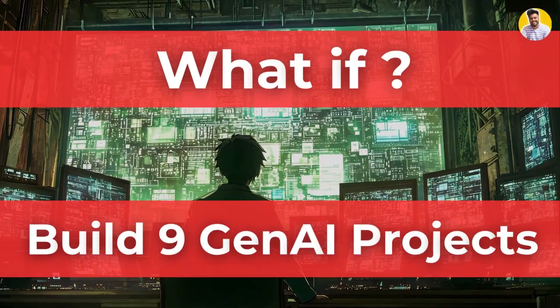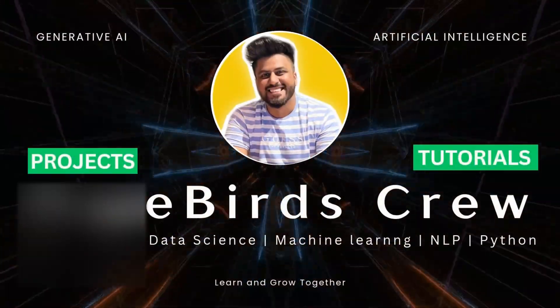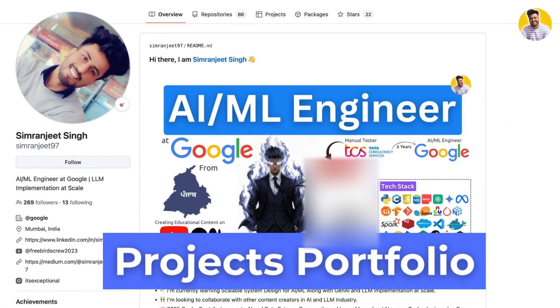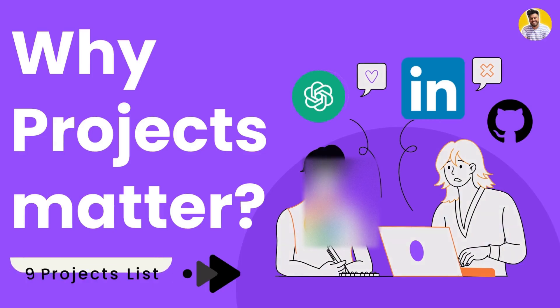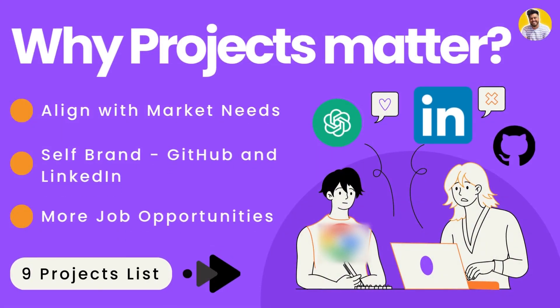What if you could build 9 GenAI projects in just 2 months and launch them before 2025 is over? Welcome to Freebirds 2. Here are 9 high-impact projects on RAG, Agentic AI, and LLMs with ideas, tech stack, and system design diagrams that you can build in the next 8 to 10 weeks. GenAI is exploding, demand for ML and AI engineers is rising, and having finished projects is a huge differentiator on your resume or GitHub profile.